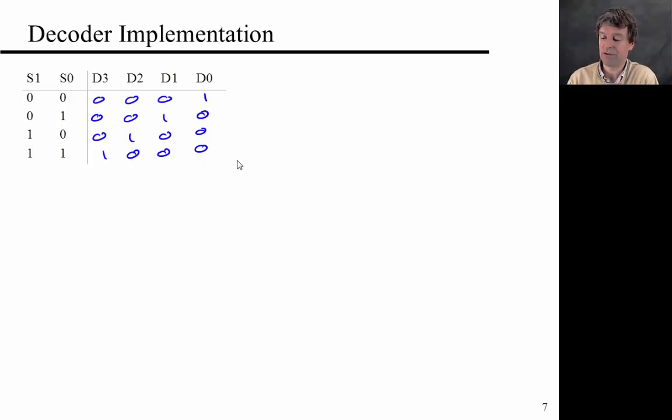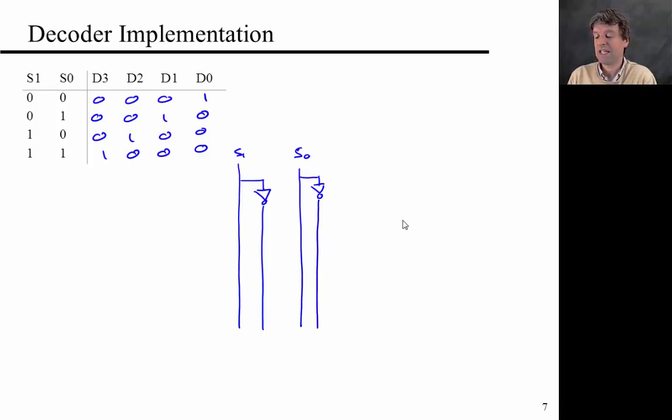This is a very simple circuit. If you draw the circuit diagram, it kind of looks something like that. I'm just going to draw this with the input S1 here and S0 here. I'm just going to provide the not S0 and not S1. And then each of these outputs here is really just an AND gate. So this is D3, D2, D1, and D0.